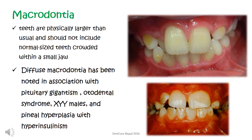Macrodontia — teeth are physically larger than usual — should not include normal-sized teeth crowded within a small jaw. Whether it is relative or absolute macrodontia should be ruled out, as teeth may appear large because of underdeveloped jaws. Diffuse macrodontia has been associated with pituitary gigantism, otodental syndrome, XYY males, and pineal hyperplasia with hyperinsulinism. In the picture, we can see that the maxillary central incisors are abnormally large.